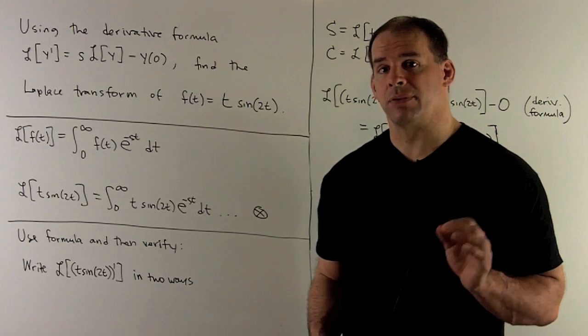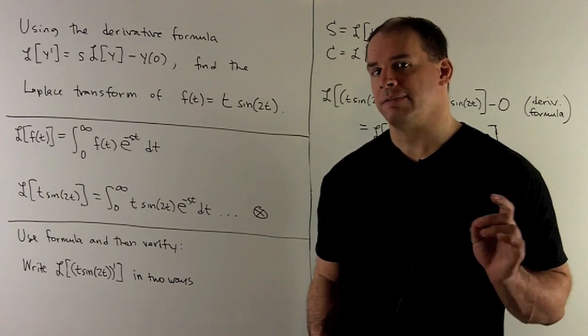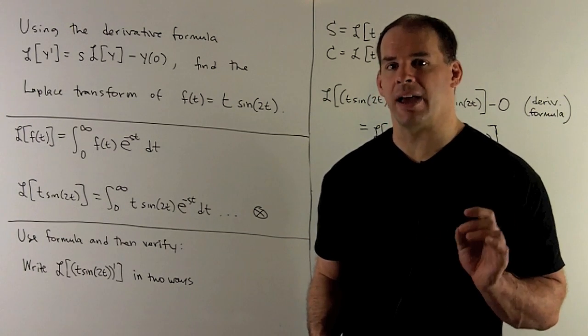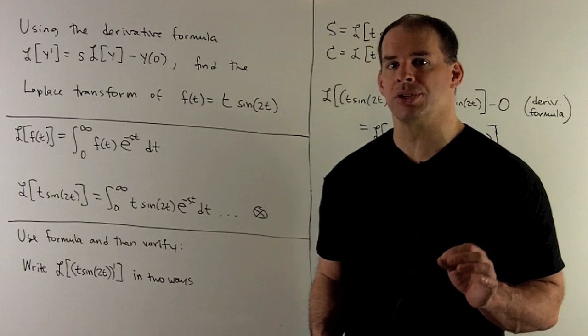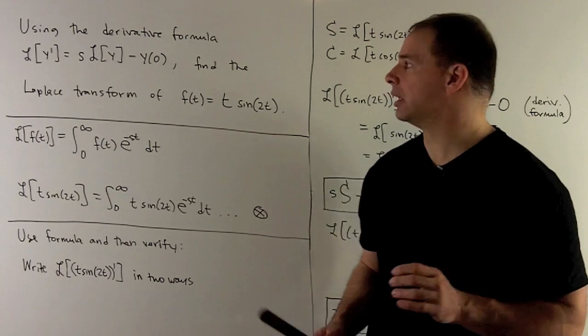Using the derivative formula for the Laplace transform, find the Laplace transform of the function f(t) = t·sin(2t).